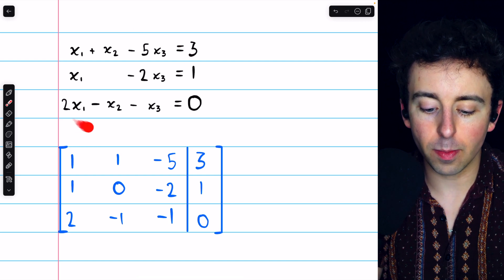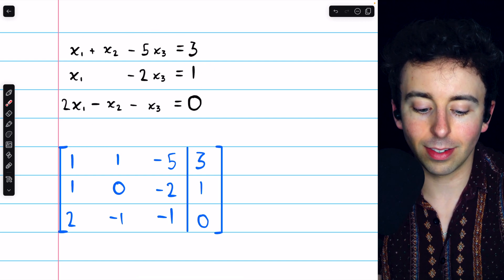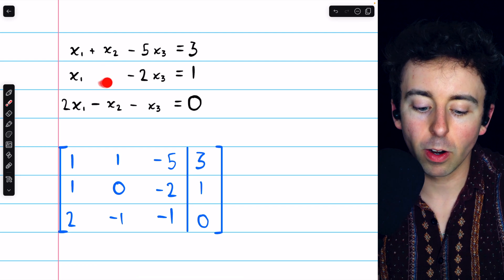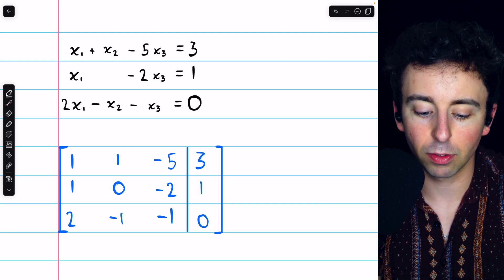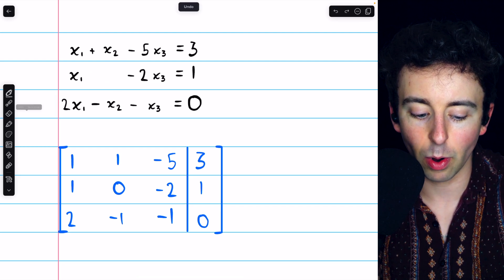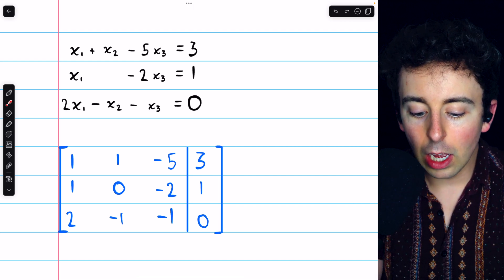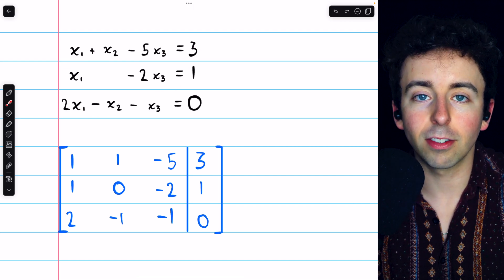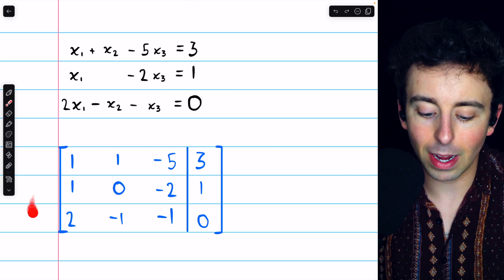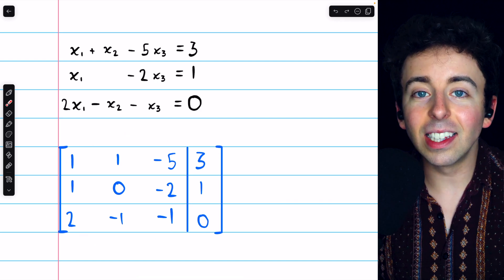Here's our system of three equations in three unknowns. Notice in equation 2, there are no x2s, but there's some blank space left there just so everything lines up nicely. We can put this equation, or this system I should say, into an augmented matrix just like this.